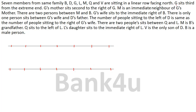The first information: G sits third from the extreme end. It is not mentioned whether from the left extreme end or the right extreme end. So G is third from the extreme end — counting from the left, G can be at position 3, and counting from the right, G can also be at position 3 from the other side. There are two possibilities.